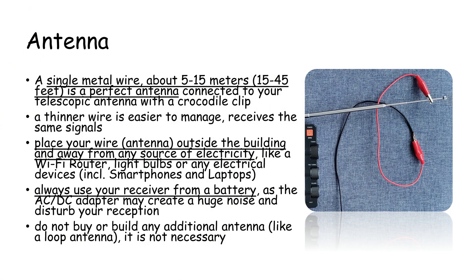Now let's talk about the antenna. This is also very easy. A single metal wire, about 5 to 15 meters or 15 to 45 feet, is a perfect antenna connected to your telescopic antenna with a crocodile clip. A thinner wire is easier to manage and receives the same signals. Always place your wire antenna outside the building and away from any source of electricity, like a Wi-Fi router, light bulbs, or any electrical devices.